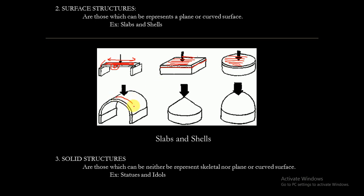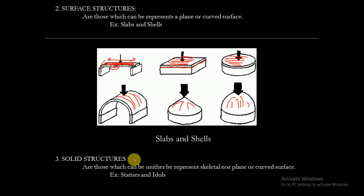This is a curved surface, and this is also a curved surface — these are examples of surface structures. The third type is solid structures, which represents neither a skeletal nor a plane or curved surface. Apart from surface and skeletal structures, all others are called solid structures. Examples are statues and idols.